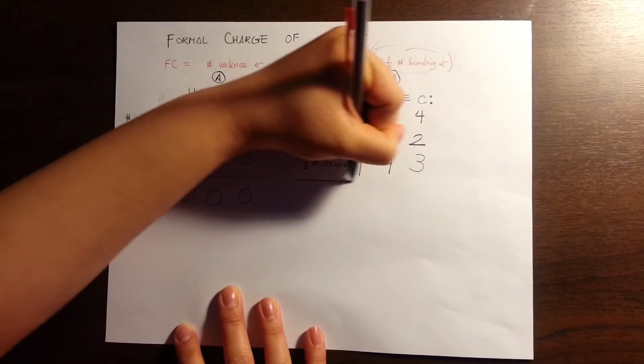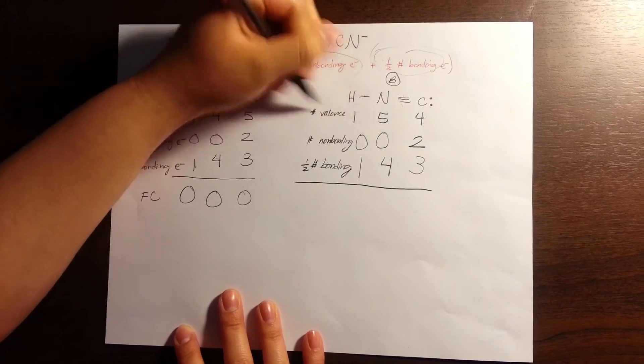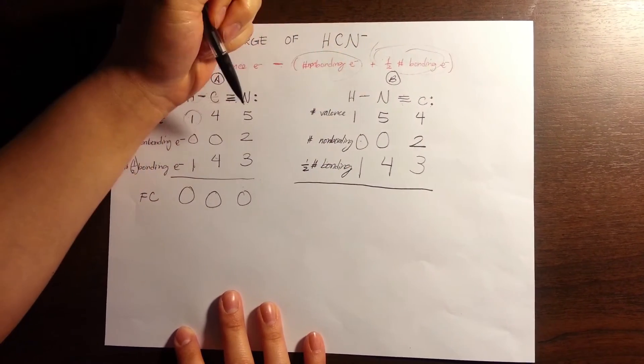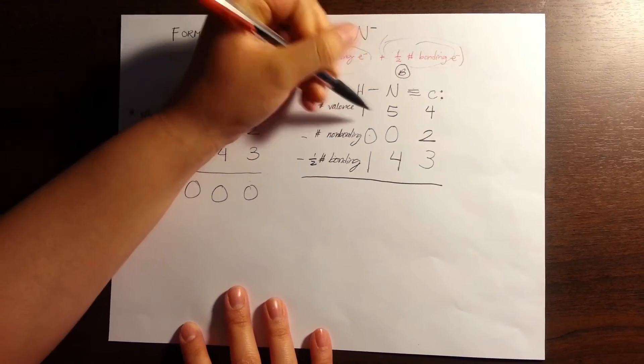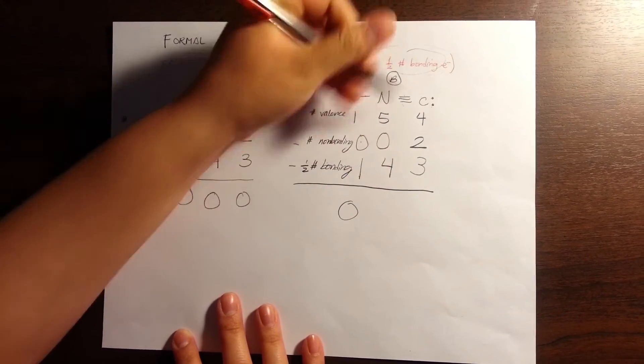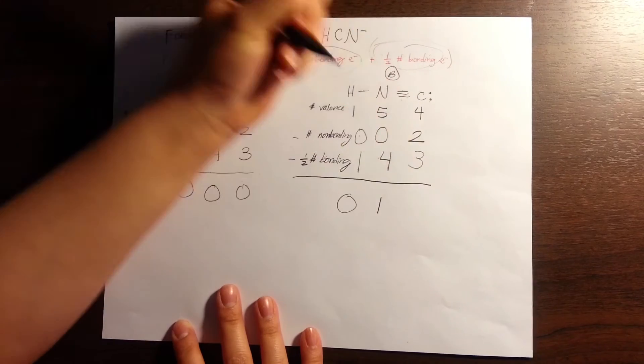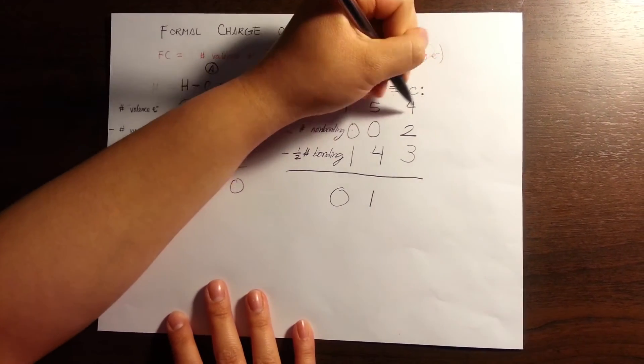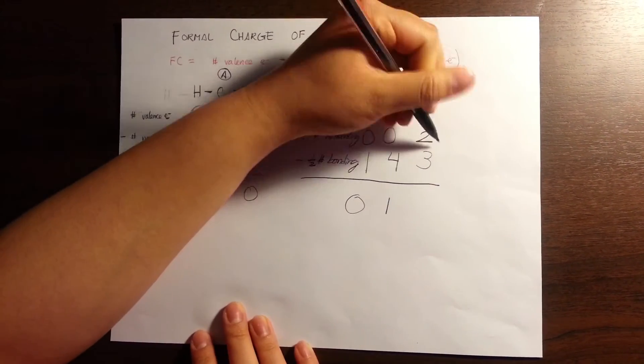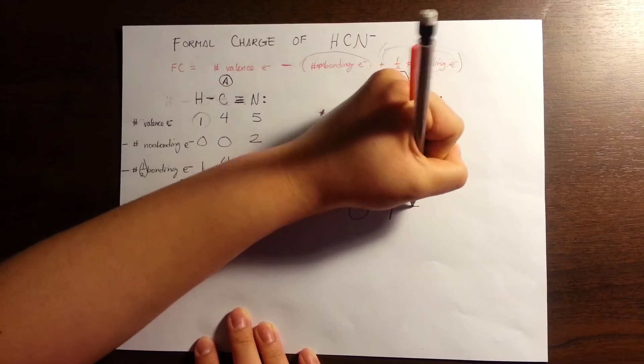Now we're going to do the math by subtracting these values from the total number of valence electrons. So one minus one is zero, five minus four is positive one, and four minus two minus three is negative one.